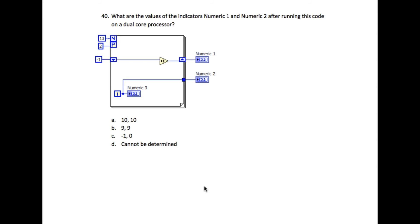So the parallelizable loop is going to execute just like a simple for loop. The only difference is it will execute faster, as it is going to separate its processes to separate processors. So the answer is going to be B: 9, 9.